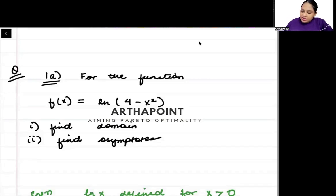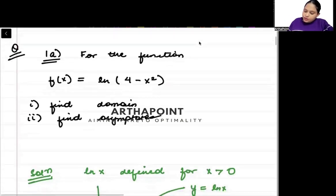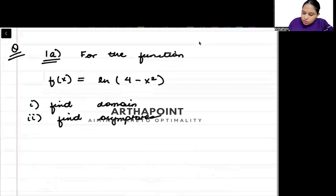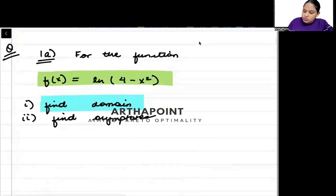Let us look at this first question. Let us see what the question is. For the function f(x) equals ln(4 minus x square), find the domain and find the asymptotes.